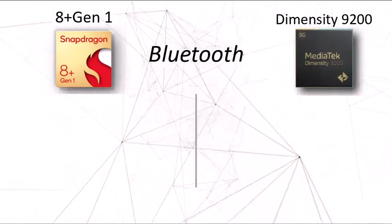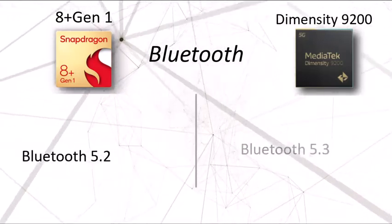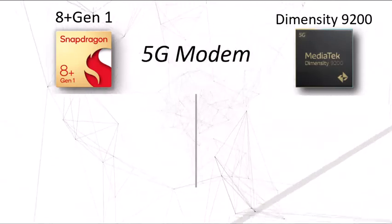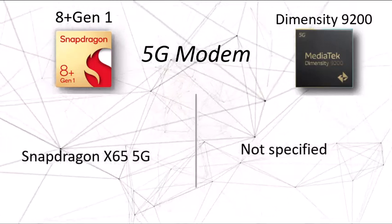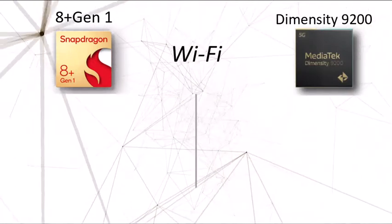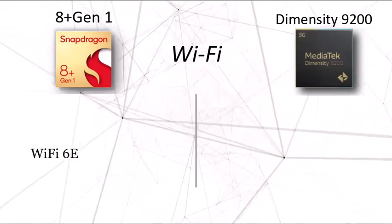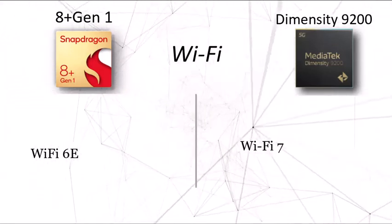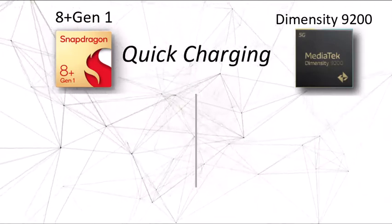Bluetooth is another area where the Dimensity 9200 is a world first, coming with Bluetooth 5.3, the latest version, making Bluetooth 5.2 a thing of the past. The 5G modem spec has not been confirmed for the Dimensity 9200 — if we get that information, it will be mentioned in the description. For Wi-Fi, the Dimensity 9200 comes with Wi-Fi 7, not Wi-Fi 6E which we've seen for the past couple of years.